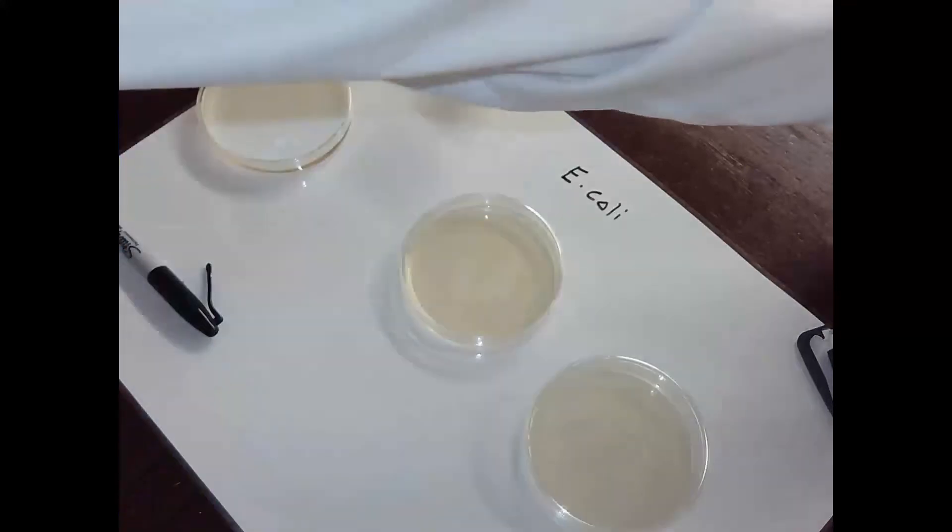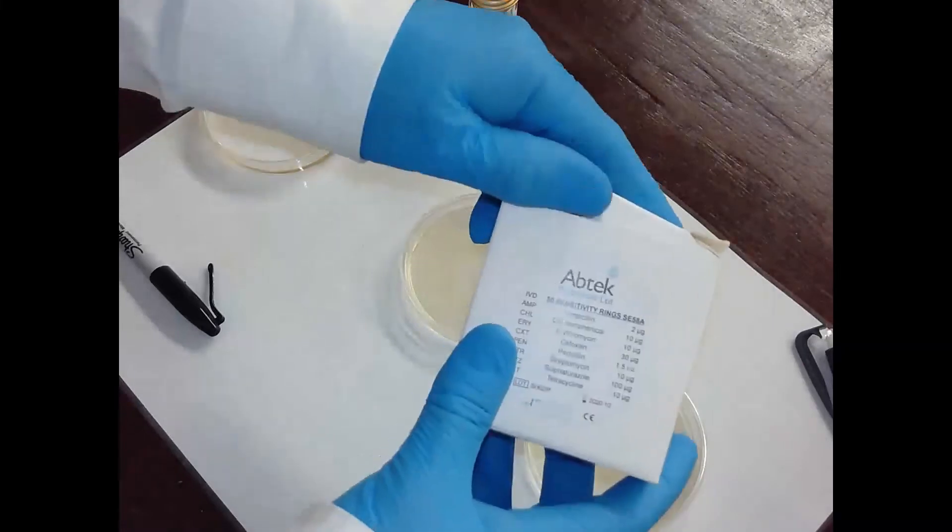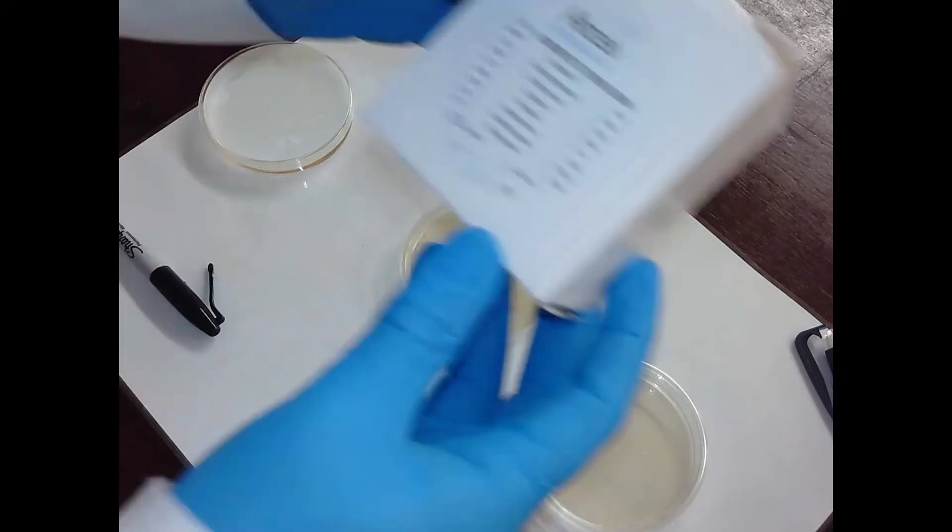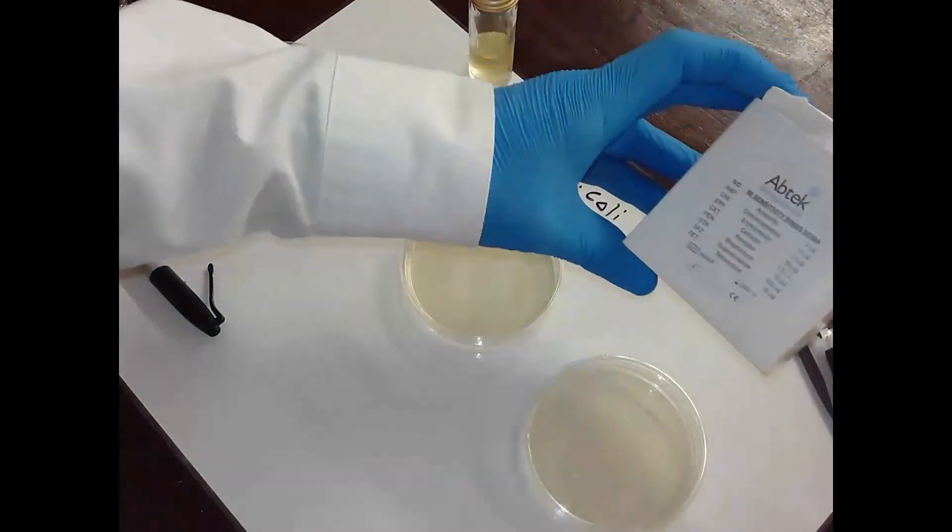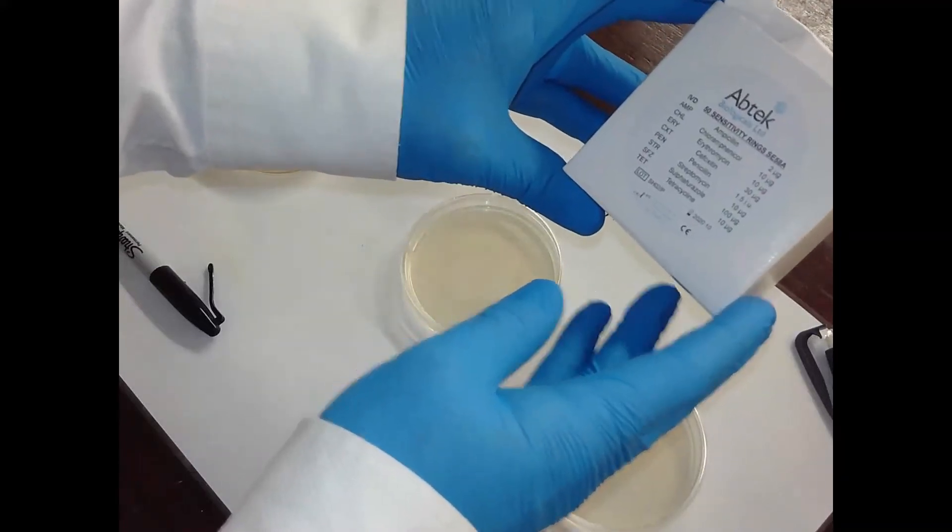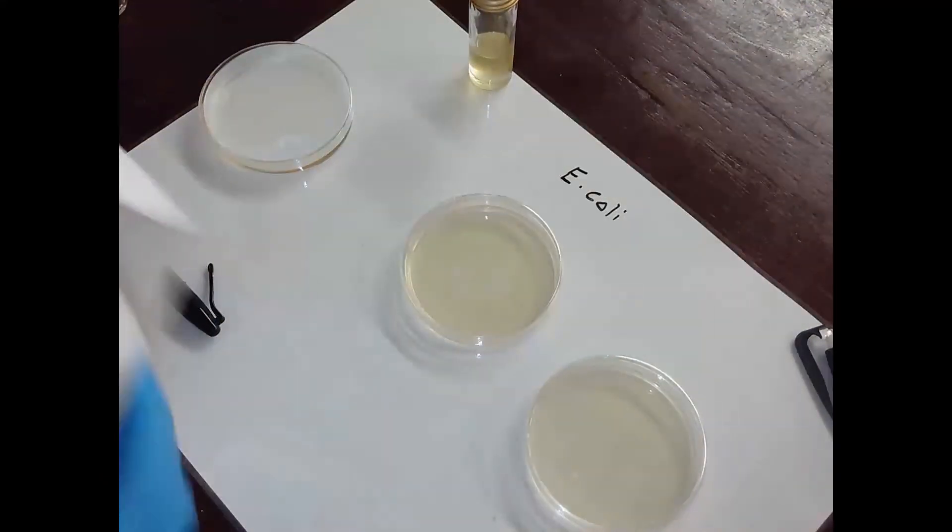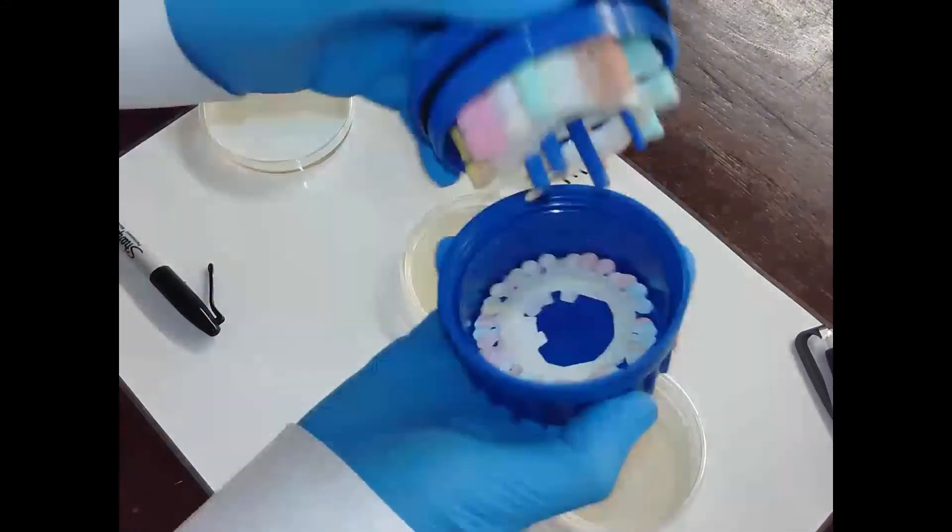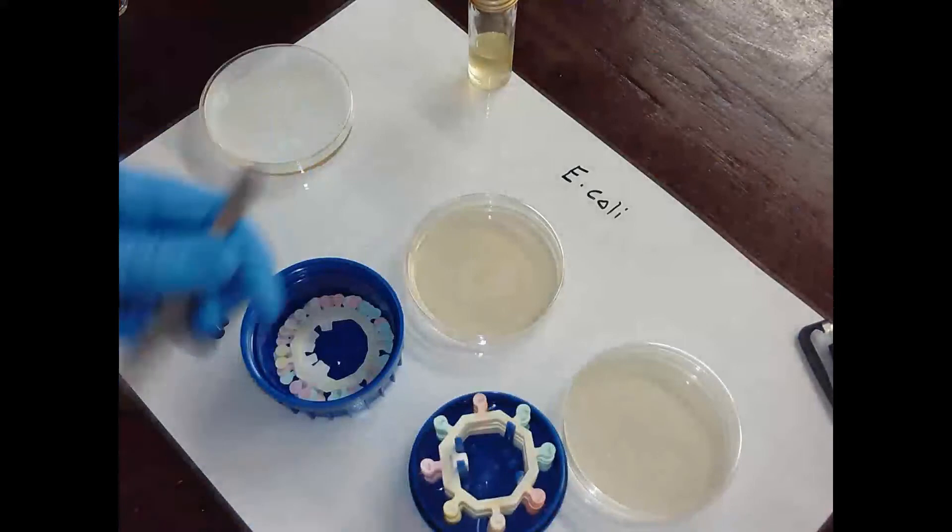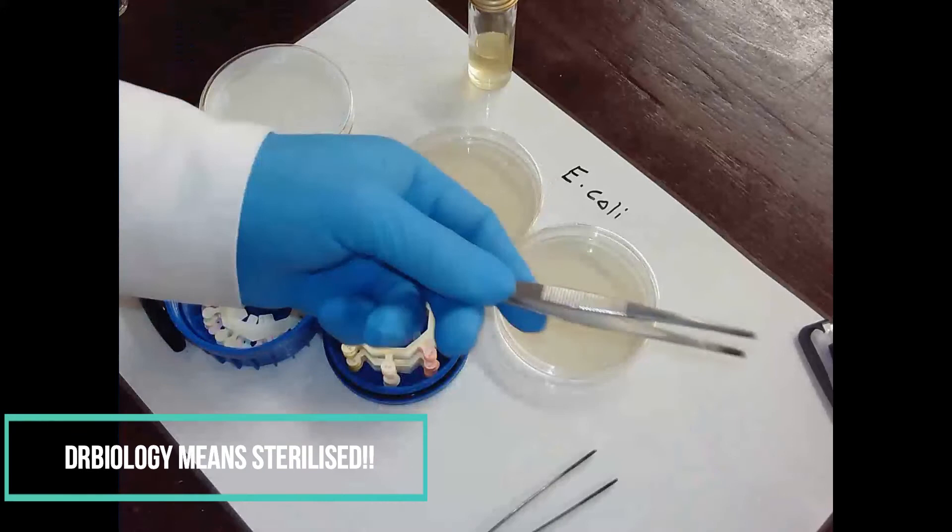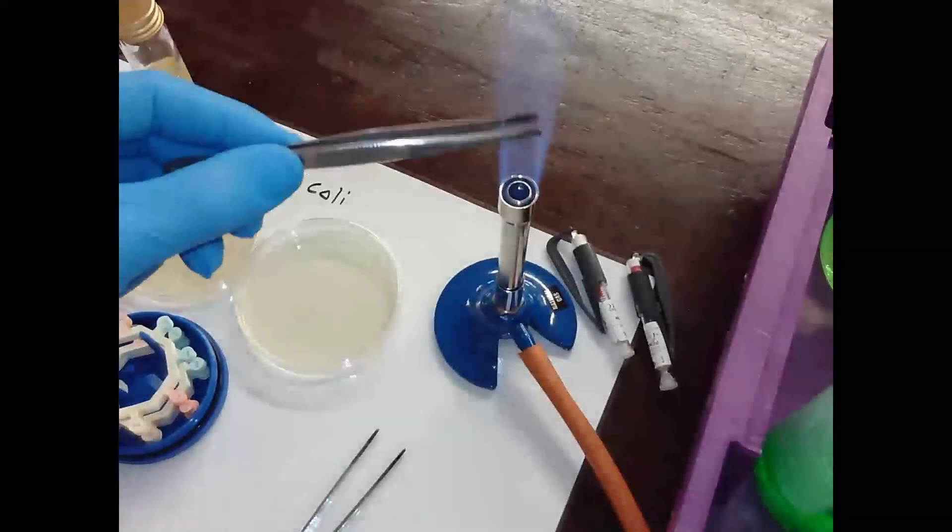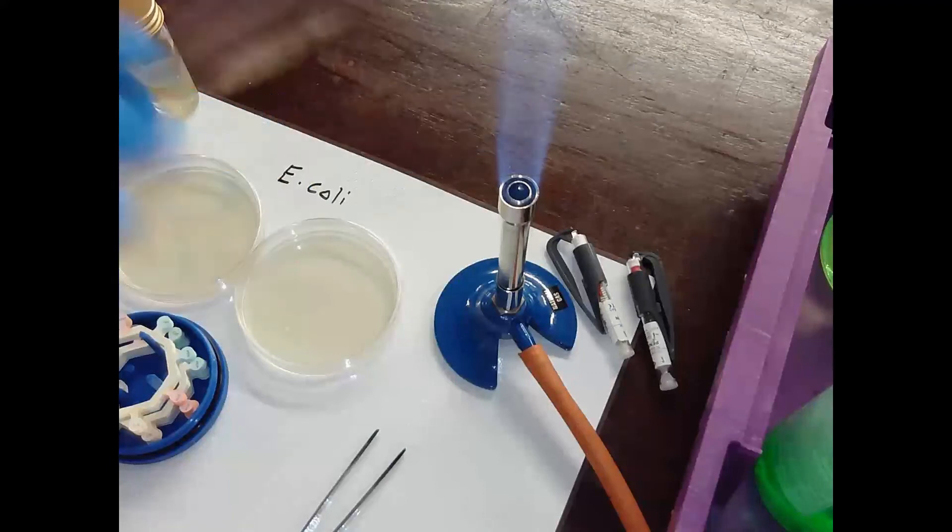We're going to test some antibiotics. I've got some A-level stuff that we're going to use today because I thought it'd be more interesting. We're going to be looking at sensitivity rings. We're going to test ampicillin, erythromycin, penicillin, streptomycin, tetracycline - quite a lot of different antibiotics today. The antibiotic ring comes in a package like this. I need to get a set of tweezers.